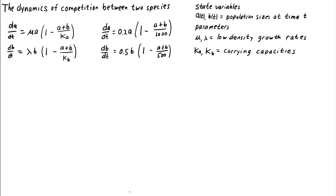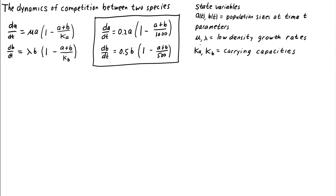Now that we've derived our model for the dynamics of competition between two species, let's see what we can do analytically to understand the behavior of solutions to this dynamical system. To be concrete, we'll use specific values of the parameters. We'll set the low density growth rate parameters, mu and lambda, to 0.2 and 0.5 respectively, and the carrying capacities, K_A and K_B, to 1000 and 500 respectively.